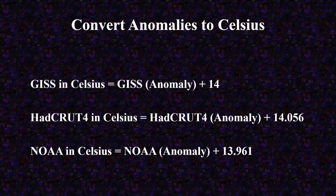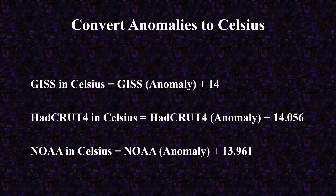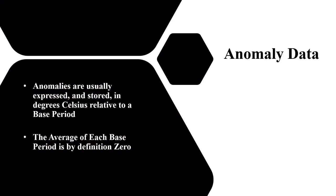On the assumption that you will want to check the logic behind this formula, there now follows a demonstration on where to locate the popular data sources, the data download links, and the supporting conversion methodology. There are a few basic facts we need to understand in order to convert climate data expressed as anomalies into the more familiar Celsius and Fahrenheit measurements.